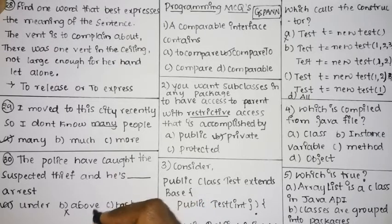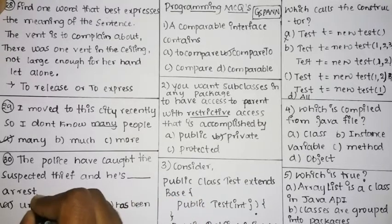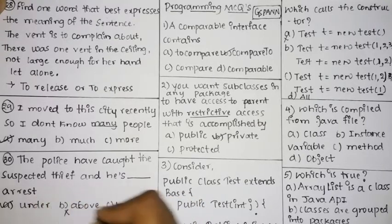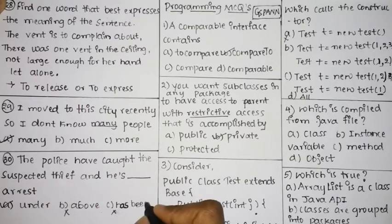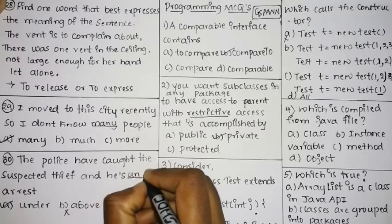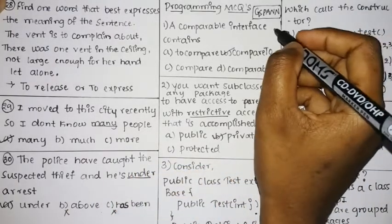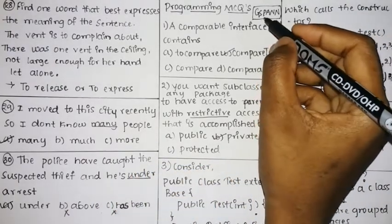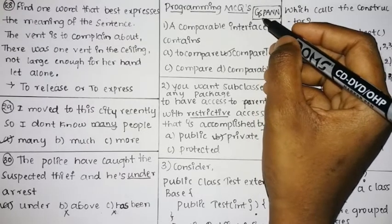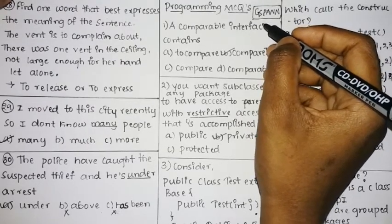Next: 'The police have caught the suspected thief and he is ___ arrest.' The option 'above arrest' is incorrect — you cannot say above arrest. The correct phrase is 'under arrest.' If it were past tense it would be 'has been arrested,' but here the blank requires 'under,' so the answer is 'under arrest.'